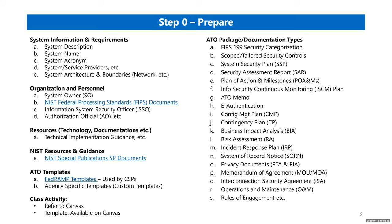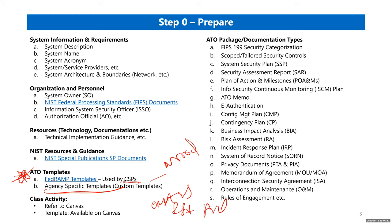A note on templates: many organizations have their own specific templates. Some use FedRAMP templates even though those are mostly for cloud service providers. Others use GRC tools — Governance, Risk, and Compliance tools — like EMASS, RSA Archer, or Exacta, rather than Word or Excel documents.